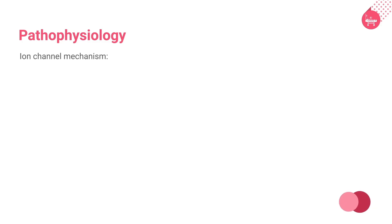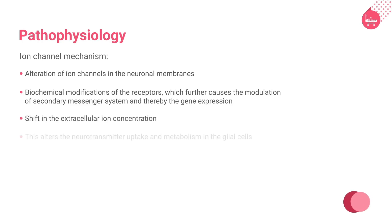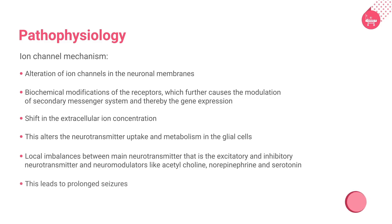Another theory describing the pathology of epilepsy is the alteration of ion channels in the neuronal membrane. This results in the biochemical modifications of the receptors, which further causes the modulation of the secondary messenger system and thereby the gene expression. This causes a shift in the extracellular ion concentration and alters the neurotransmitter uptake and metabolism of the glial cells. It also results in local imbalances between the excitatory and inhibitory neurotransmitters and neuromodulators like acetylcholine, norepinephrine, and serotonin, which causes prolonged seizures.